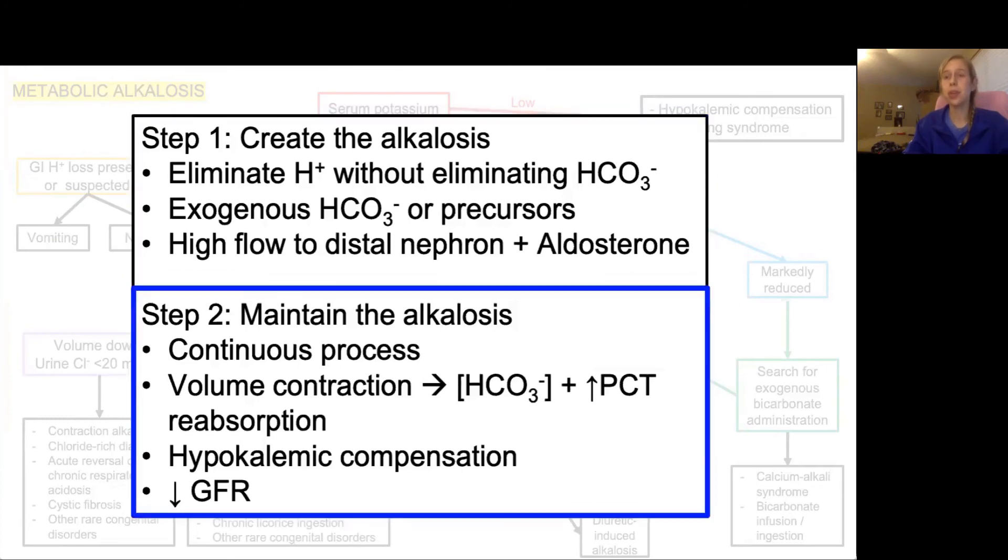And then step two, what is happening that is maintaining the alkalosis? Is there a continuous process going on that's creating the alkalosis without a break, without letting the body compensate? Is there volume contraction leading to a relative increase in the concentration of bicarbonate and an increased reabsorption of bicarb in the proximal convoluted tubule? Is there hypokalemic compensation going on? Or does the patient have a GFR below 40, meaning that they're simply not able to get rid of the extra bicarb that's being created by the process in step one?